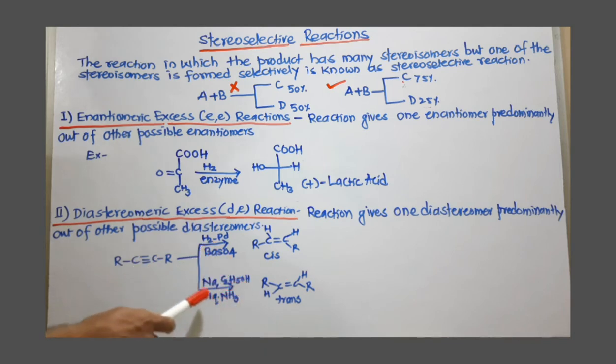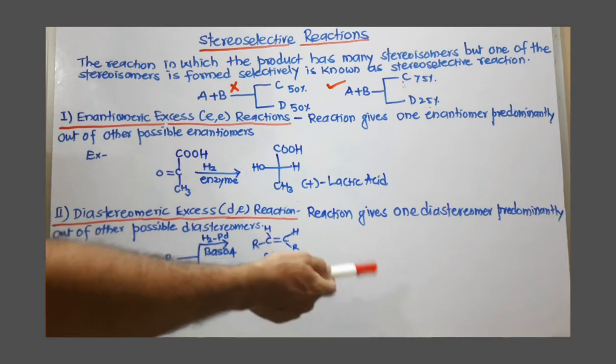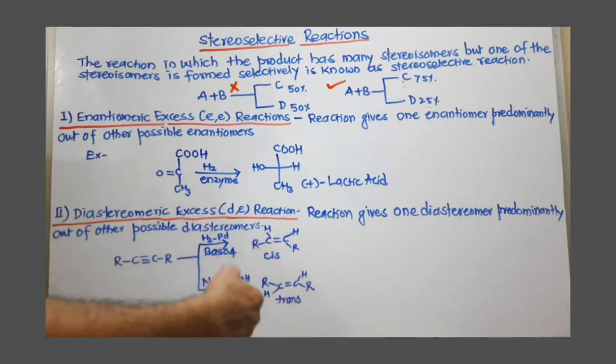And if you change the reaction condition, under this reaction condition, we get only trans alkene. So out of cis and trans, trans is selected.